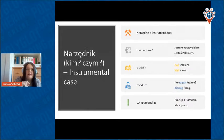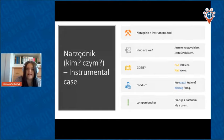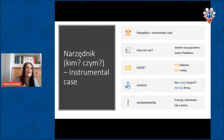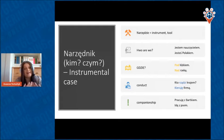The second important case is instrumental — narzędnik. 'Narzędzie' means instrument or tool. We use it when we talk about all the tools — in English you say 'I will do it with a hammer', but in Polish we say 'zrobię to młotkiem', without any preposition. We just use the instrumental case and everything is clear. This case represents the situation of using a tool.